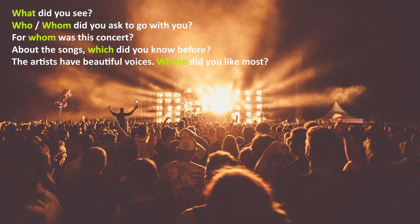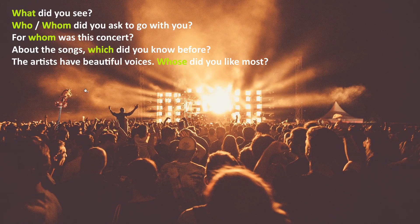Here are some examples of interrogative pronouns used as the object. 'What did you see?' — you can see something, which is the object, so we are asking about the object. 'Who did you ask to go with you?' or 'Whom did you ask to go with you?' Whom is used as the object only, but nowadays who is often used instead of whom when asking about the object. 'For whom was this concert?' 'Which did you know before?' 'Whose did you like most?'